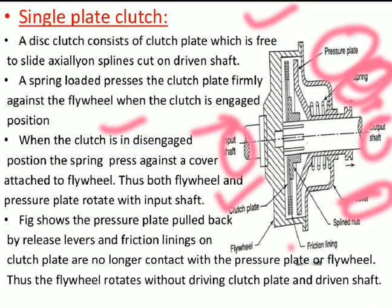Consider two rotating members: one member is rotating and another remains stationary. If we bring the stationary member in contact with the rotating member, both will move in the same direction. Similarly here, the flywheel is rotating, and the pressure plate is brought into contact with the flywheel, so the pressure plate also starts rotating. When the clutch comes back to engaged position, the pressure plate releases its contact with the flywheel, returns to its initial position, and transmits power through the output shaft to the gearbox.